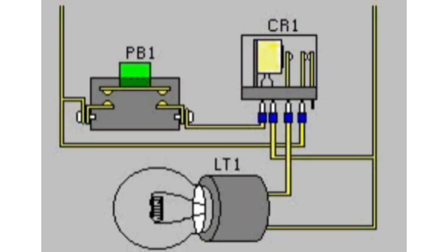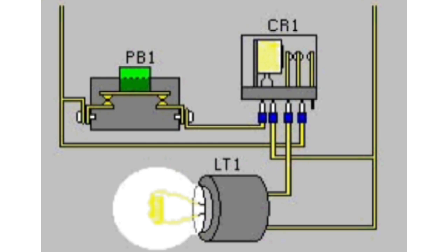When the switch is turned off, the coil loses power, the armature moves back, and the light turns off.